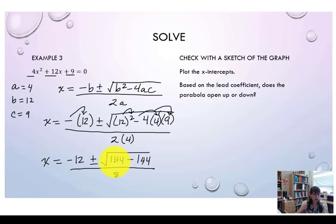Look at under the radical here: 144 minus 144. That is 0, so that simplifies as the square root of 0, and square root of 0 is 0. So to simplify the whole expression, x now equals negative 12 plus or minus 0 divided by 8.